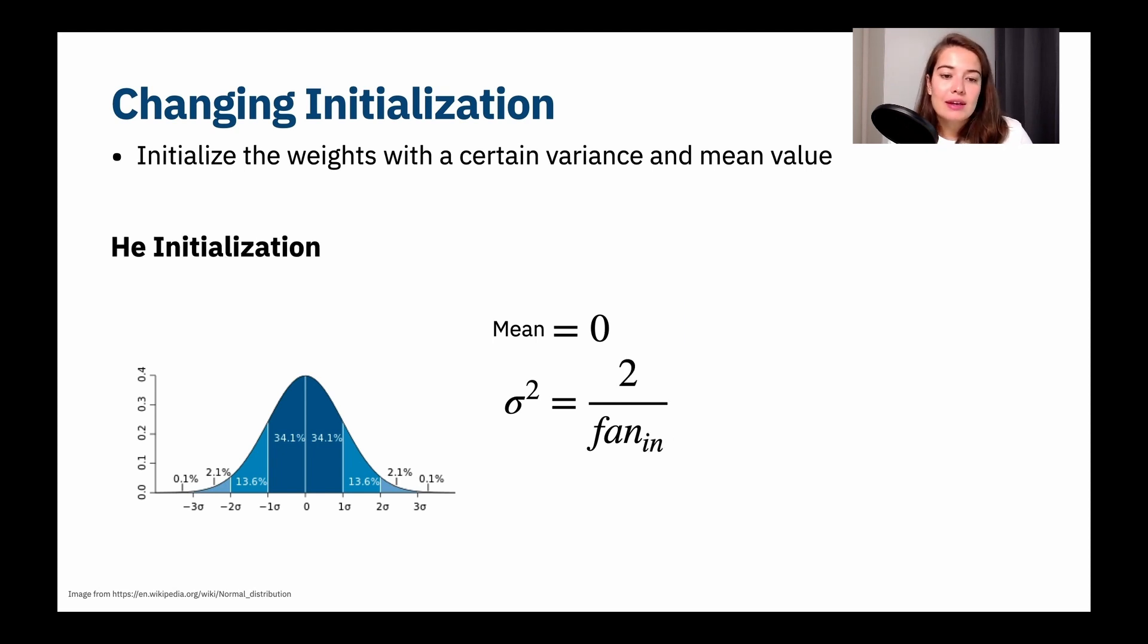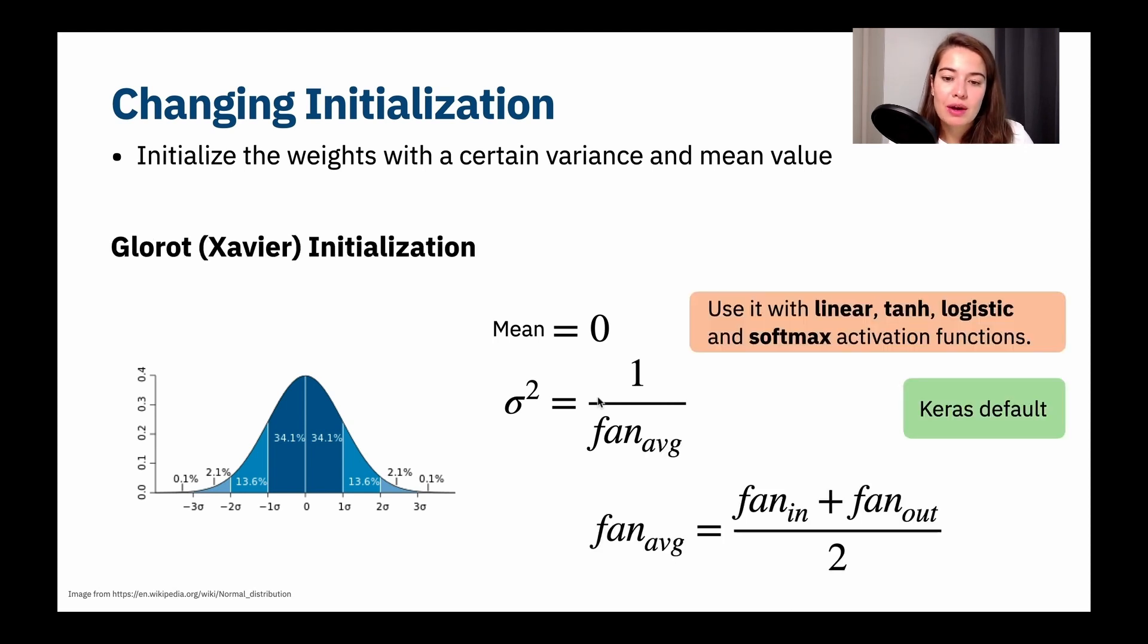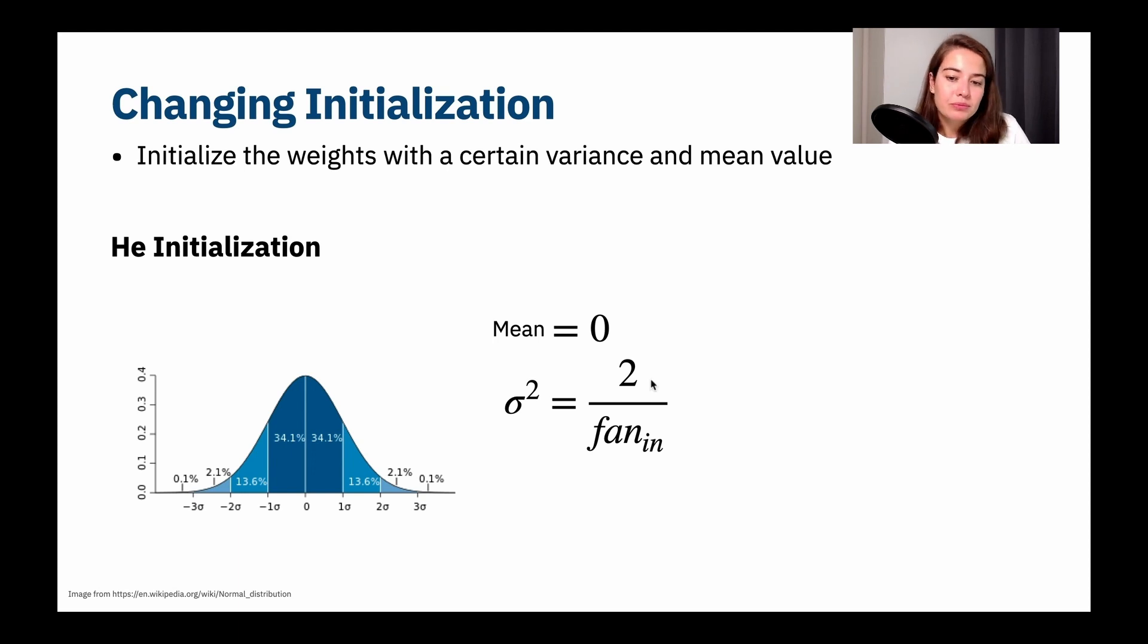The next one is He initialization. The mean again needs to be zero and the variance needs to be two divided by number of inputs. As you can see, the difference is that with Glorot, I am dividing one by the average number of the number of inputs and the number of outputs. But here, what I do is I divide two by number of inputs. This one is best used with ReLU or variants of ReLU. We're going to talk about the variants of ReLU in a second.